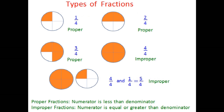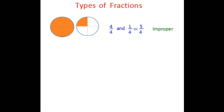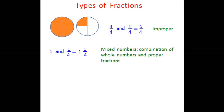Now let's look at the last part where we took the first whole pizza and a quarter of the second pizza. We know this is called an improper fraction. But can I also write it as one and a quarter? Rather than writing 1 as 4 over 4, I can just write it as 1 — the whole. So writing it as 1 and 1 over 4 is called a mixed number. Mixed numbers are a combination of whole numbers and proper fractions. So you can write it as an improper fraction or as a mixed number.